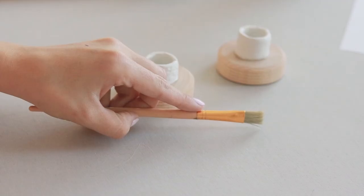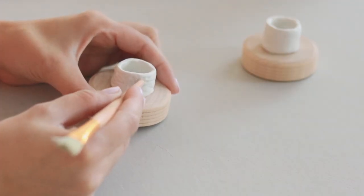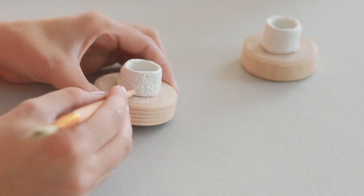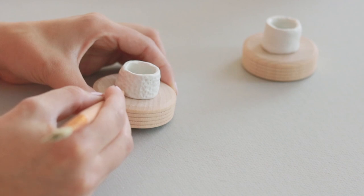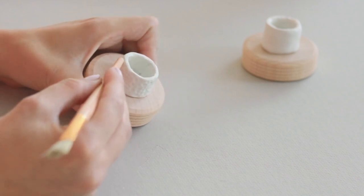The fun thing about working with Sugru is it's moldable, which means you can create texture using different objects. For one of my candle holders, I decided to experiment. I used the back of my paintbrush and made little indents, and this created a hammered look which I thought looked pretty cool.